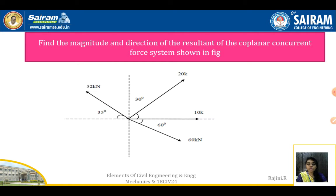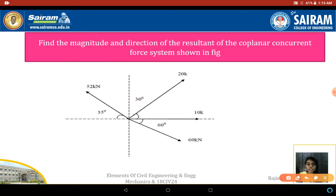Here we have four forces in the system: 10 kN, 20 kN, 52 kN, and 60 kN. Except the 10 kN, all the other three forces are inclined forces. For inclined forces, we need to resolve into two directions — one for horizontal and one for vertical.